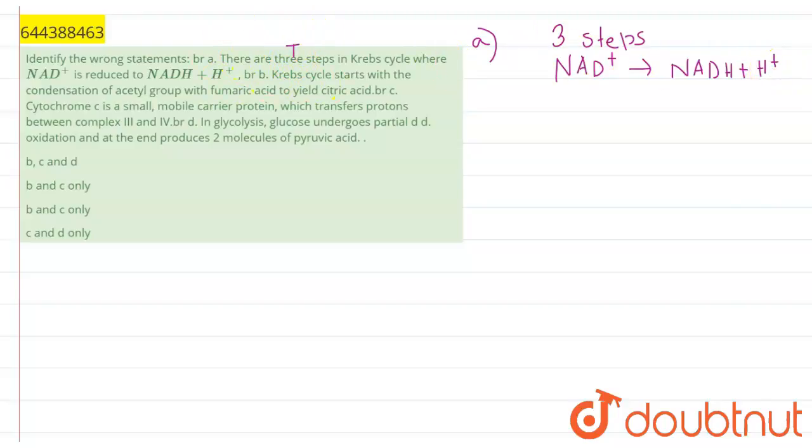The second option given is: Krebs cycle starts with the condensation of acetyl group with fumaric acid to yield citric acid. Now, the first step of Krebs cycle is acetyl CoA, which is formed at the end of glycolysis. This acetyl CoA is added to or mixed with oxaloacetate.